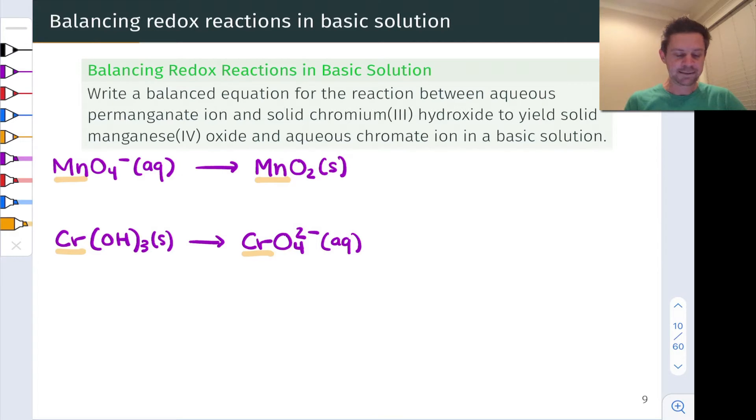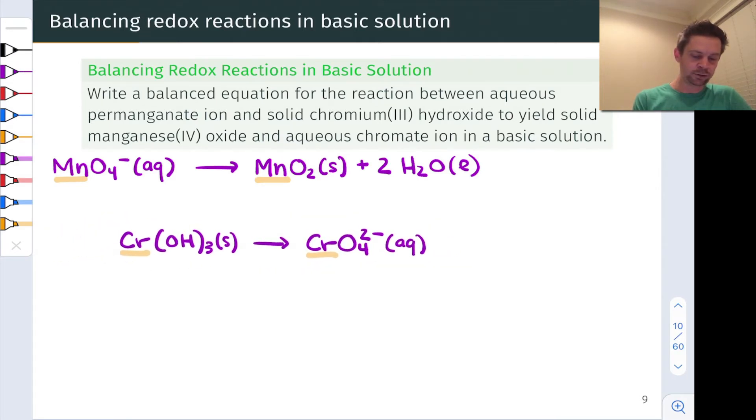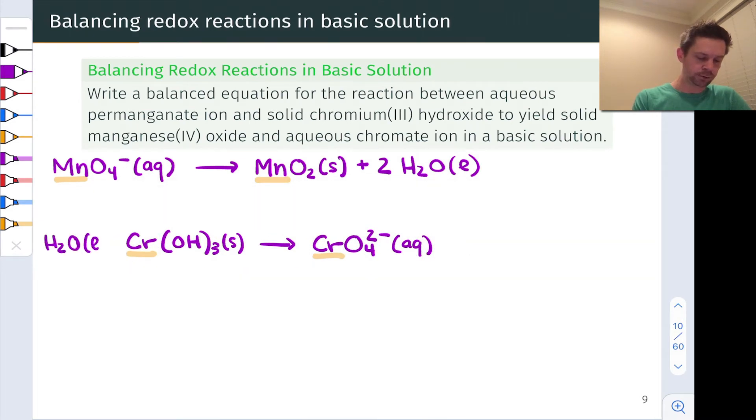To balance on oxygen in the next step, we're going to add waters to either side as needed. So for example, in the manganese half reaction, we've got four oxygens on the left-hand side and two oxygens on the right-hand side. So I'm going to need to add two waters to the right-hand side of this half reaction to ensure that we're balanced on oxygen. Likewise, in the chromium case, I've got three oxygens on the left-hand side in the chromium hydroxide, and I've got four oxygens on the right-hand side in the chromate anion. So I'm going to need to add waters to the left-hand side here, specifically a water molecule, H2O liquid, to ensure we're all balanced up on water on that half reaction.